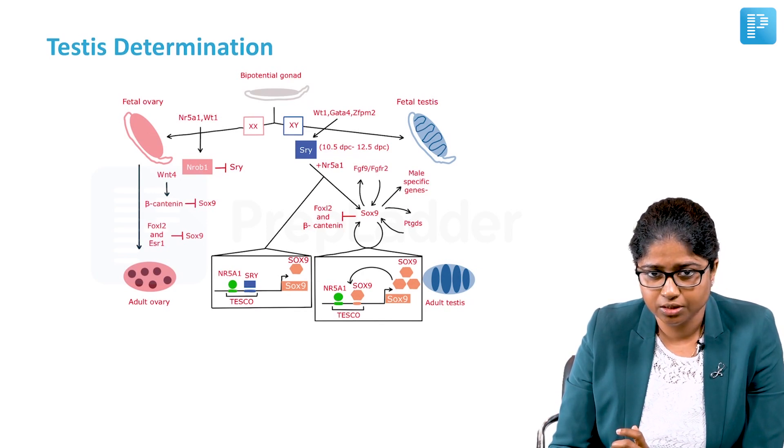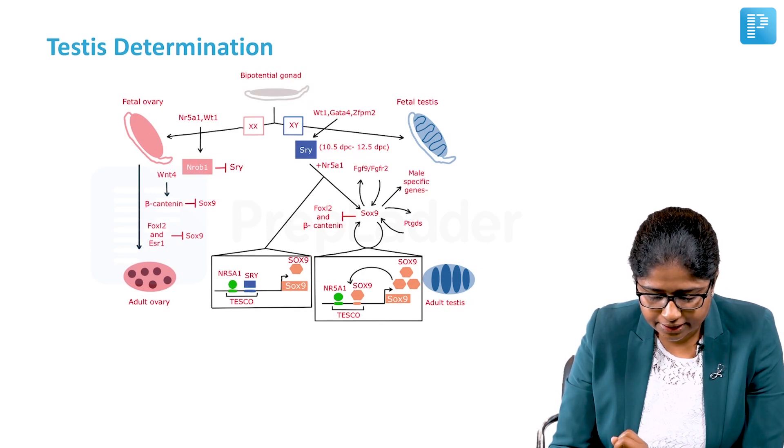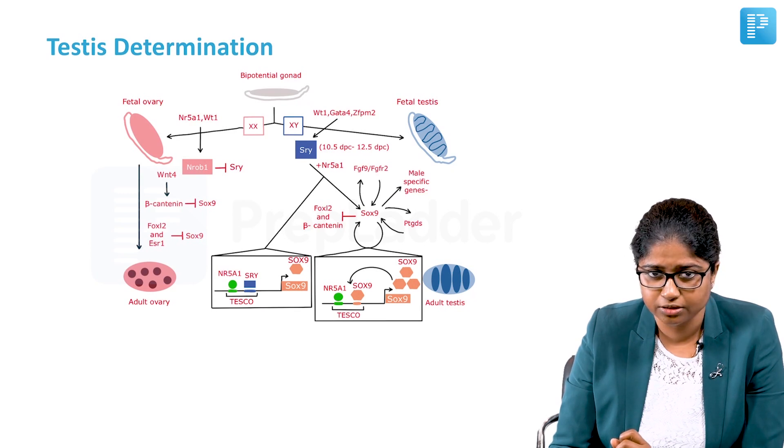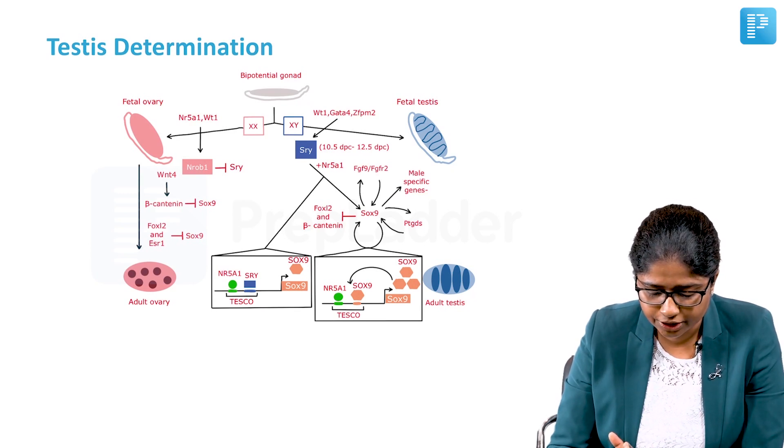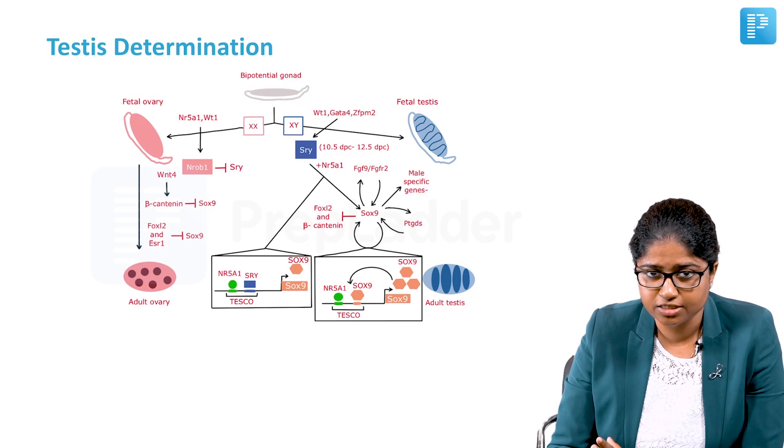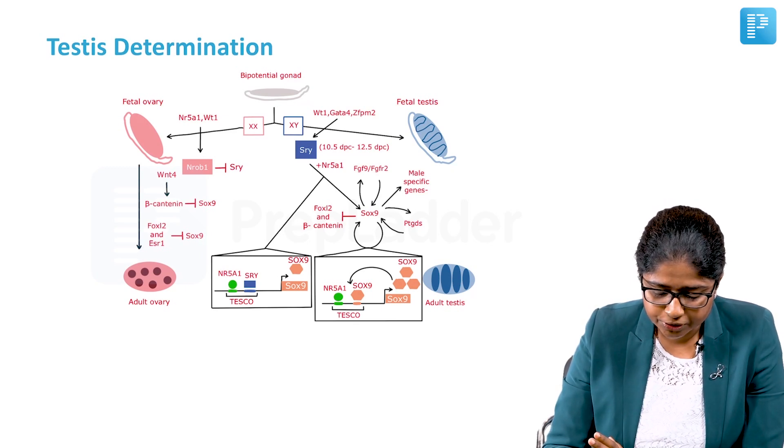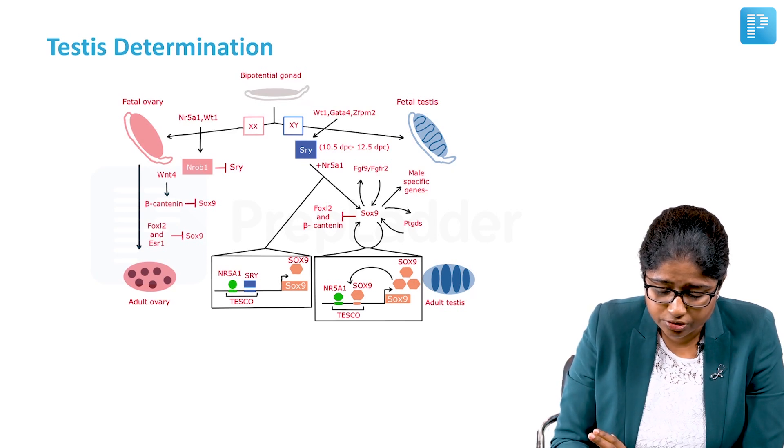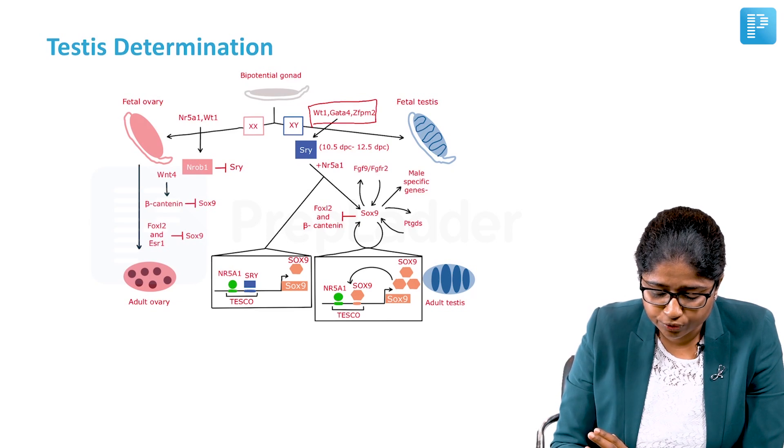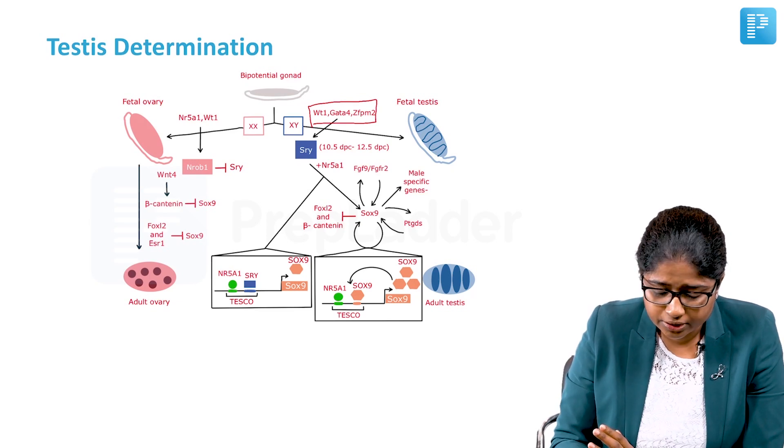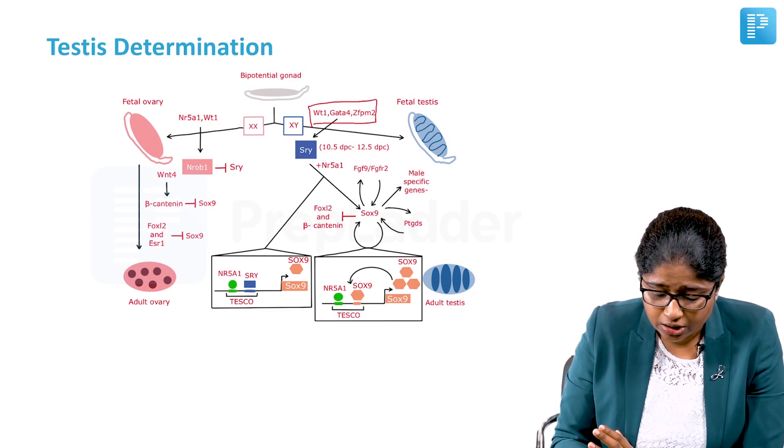This is a very nice picture representing the development of the bipotential gonad in the female and the male. I would like you to concentrate on the right half of this image. As you can see the bipotential gonad, if you have an XY chromosomal component, there are factors which are involved: the WT1, the GATA4, and the ZFPM2 factors. These are also important in the expression of the SRY gene.